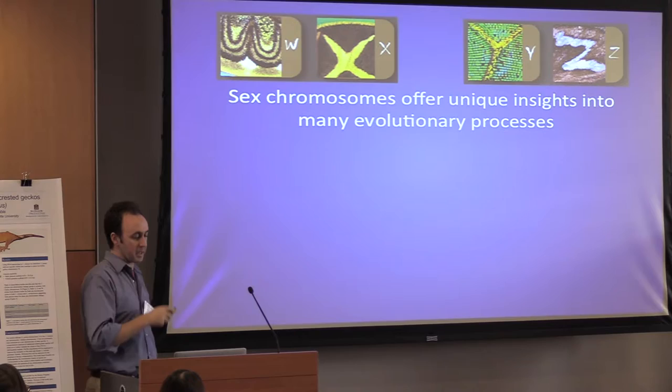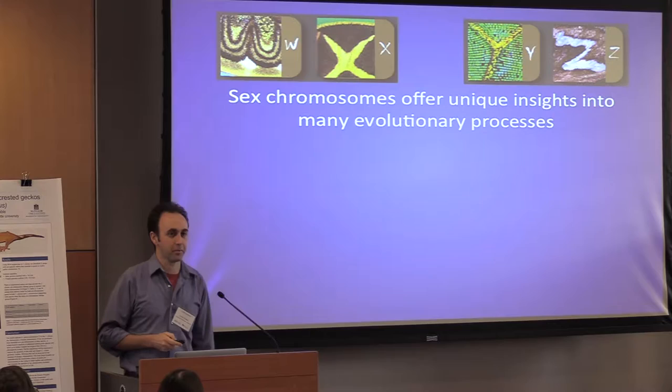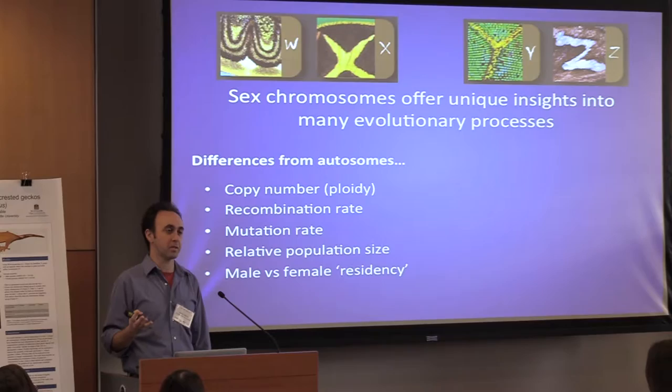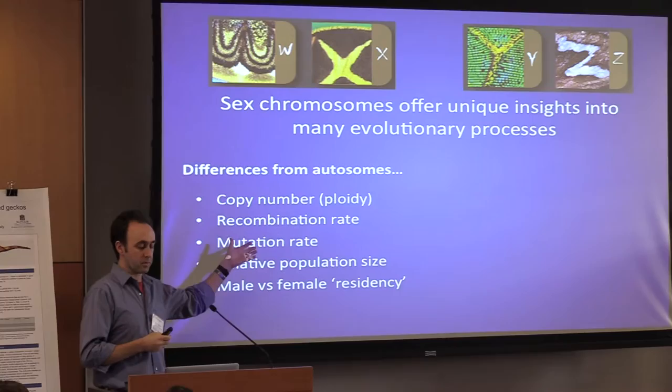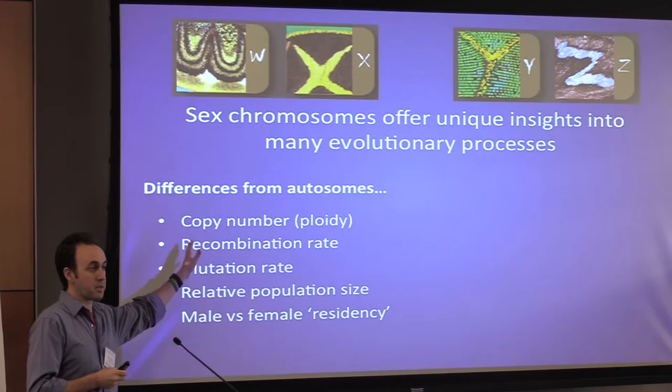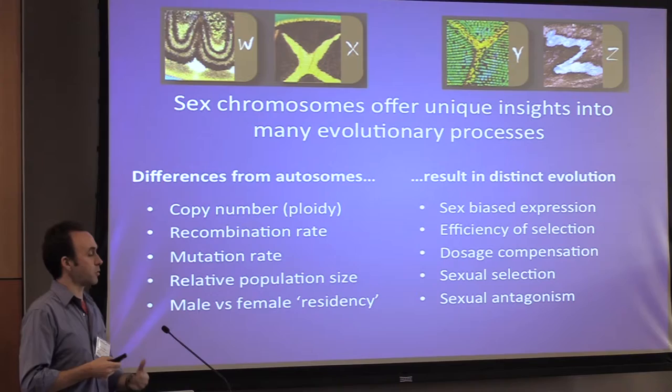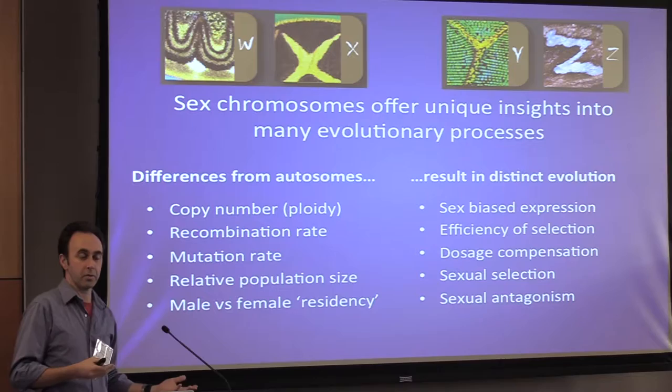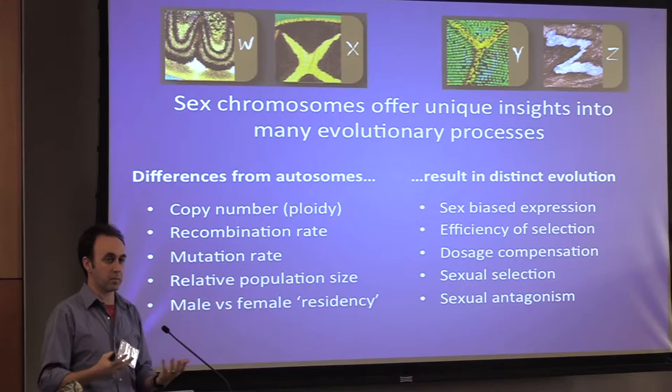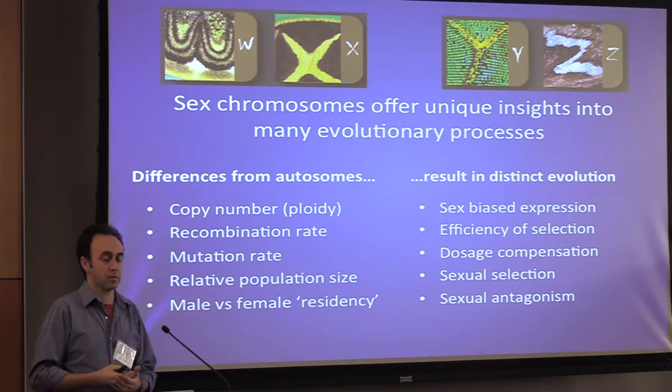Sex chromosomes are like catnip to a certain group of evolutionary biologists, and many of us here consider ourselves this. There are many important differences between the sex chromosomes — in particular the Z or X chromosome — and the autosomes, such as copy number and residence time in male versus female. As a result, evolution plays out differently between the Z or X chromosome and the autosomes, and that contrast provides a lot of space for learning about evolutionary processes.